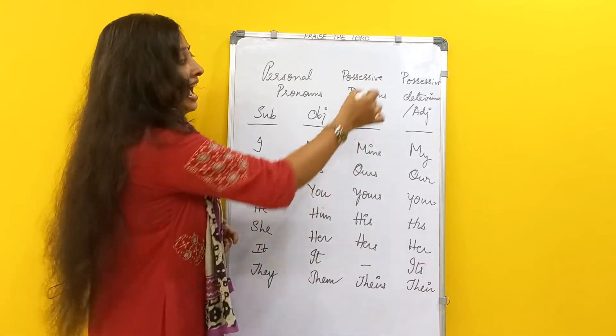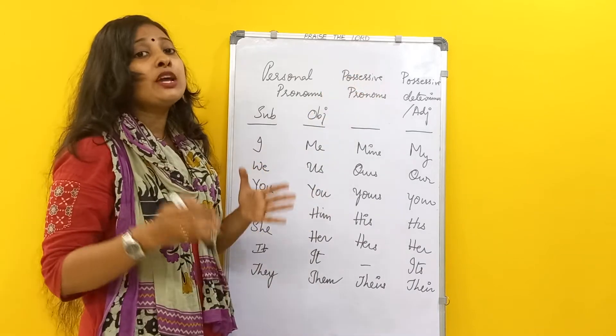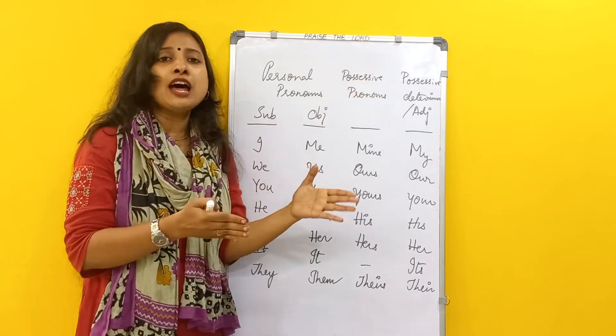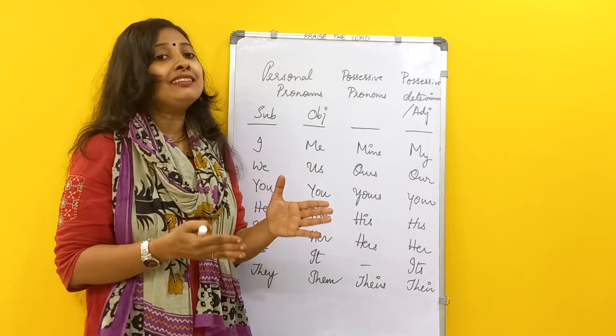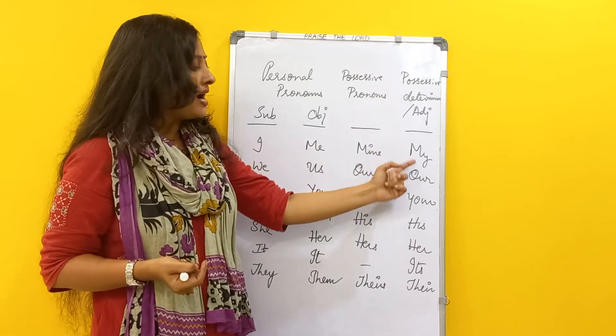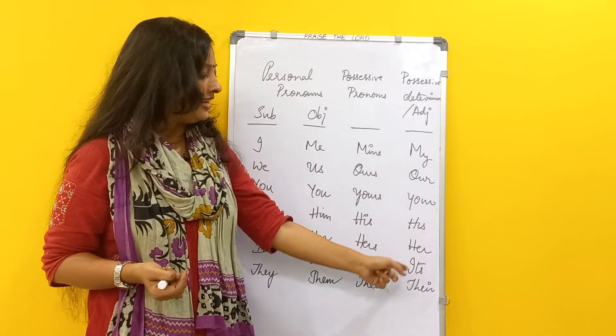And coming to possessive adjectives, they also seem to look like pronouns but they are not pronouns. Instead, they will be describing the noun. So they are my, our, your, his, her, its, their.